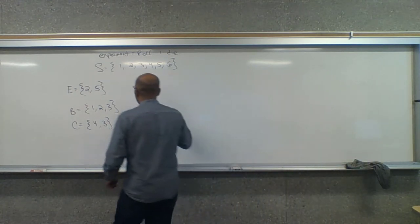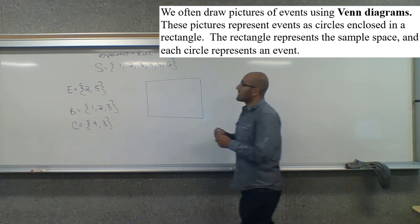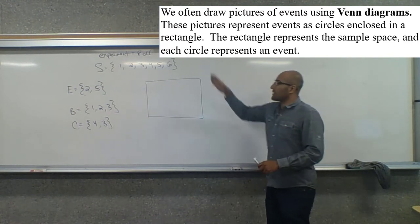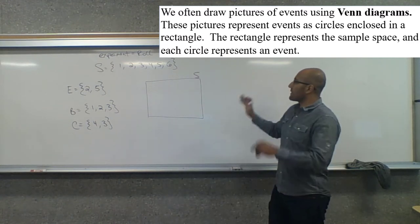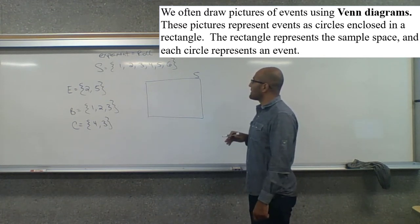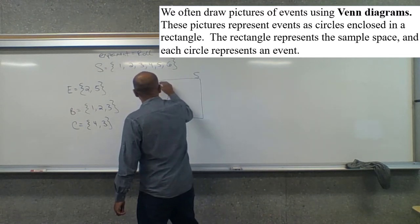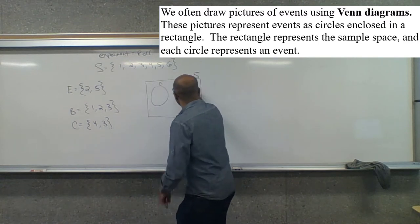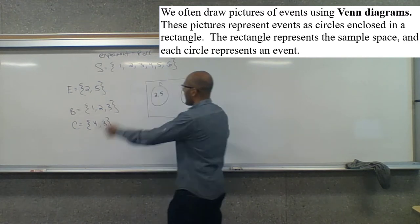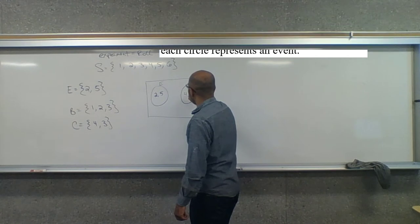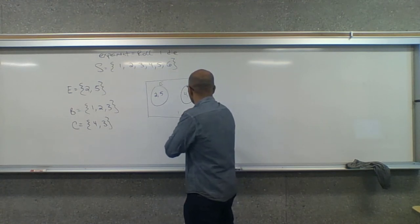We can express this with Venn diagrams. A Venn diagram is a visual representation of our sample space and events. We use a big rectangle to represent the entire sample space, and then we put circles inside to represent various events. Event E has the numbers two and five, and event C has the numbers four and three. Then the remaining outcomes — one and six — go outside the circles.